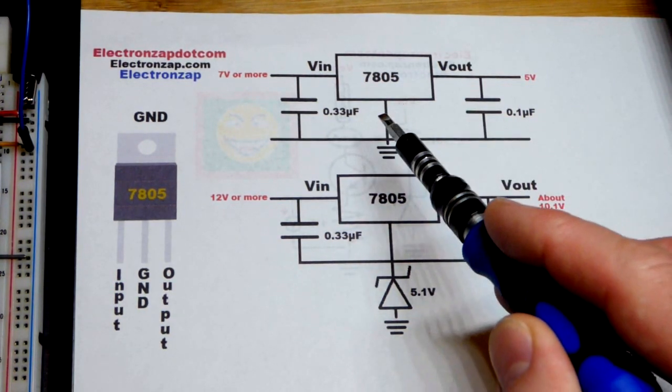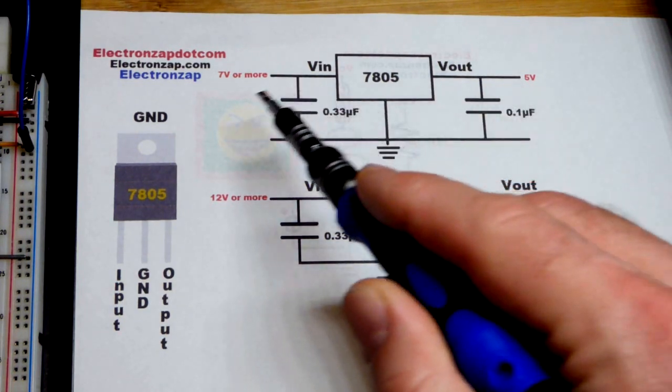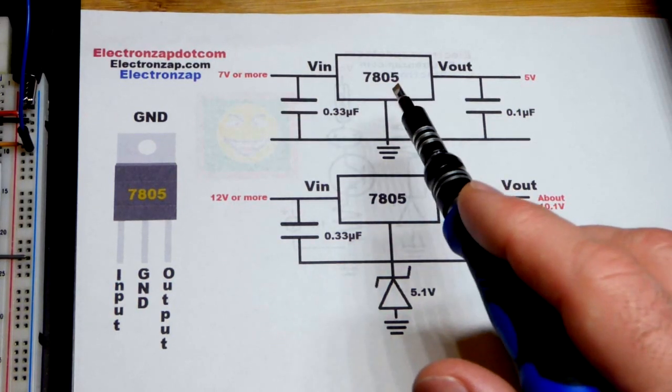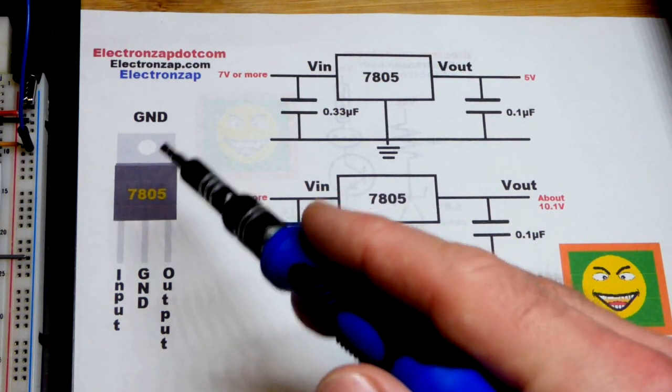What that means is that it wants to keep 5 volts between those two points right there. You give it a higher voltage and while dropping the voltage it's kind of like a resistor. It gets really hot and so here's the package, the TO220.